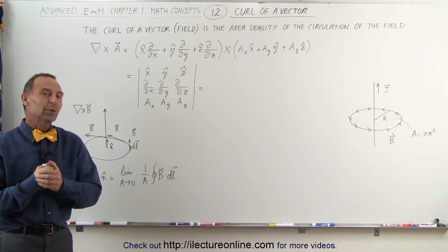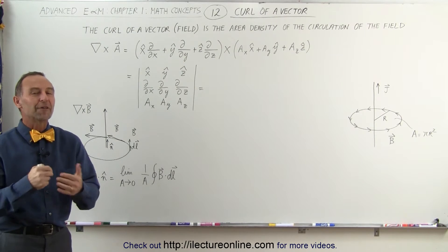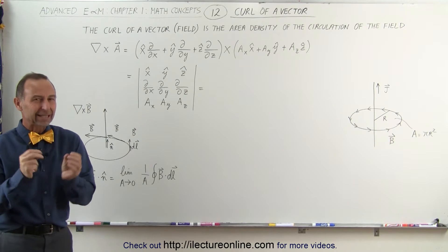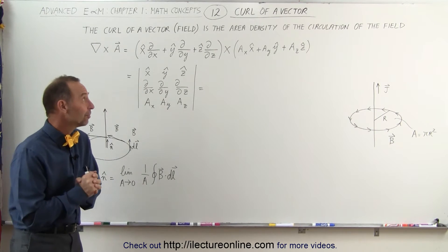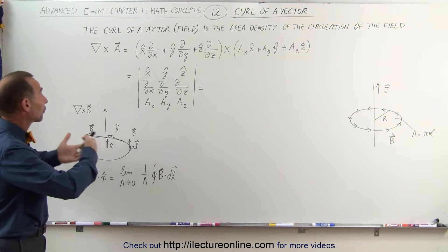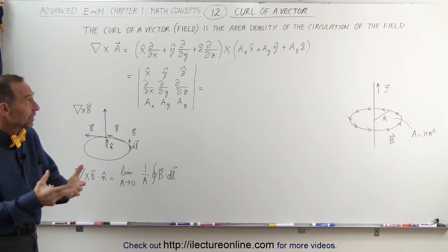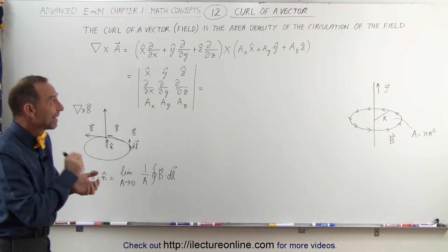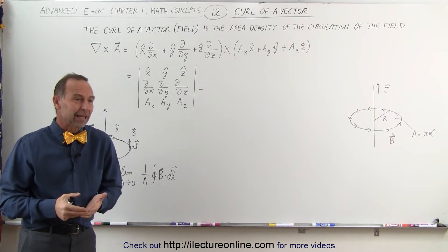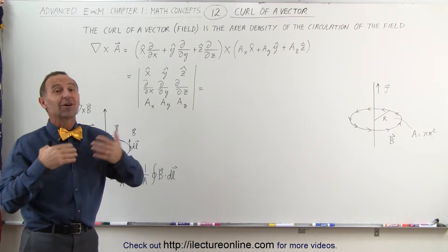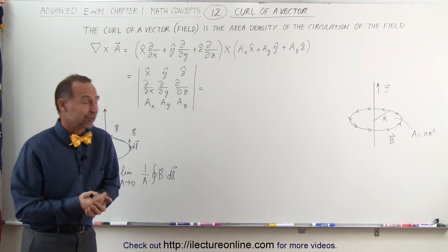Welcome to iLecture Online. Now we're going to talk about the curl of a vector. And that's, again, kind of one of those mysterious concepts. The definition of a curl of a vector or of a vector field is that it's the area density of the circulation of the field. And for most of us, that doesn't really help us at all to understand what the curl of a vector is.